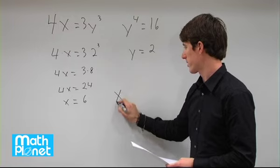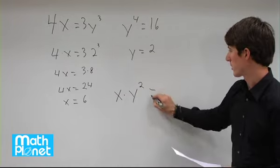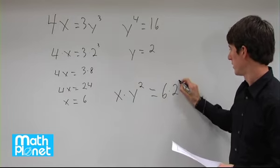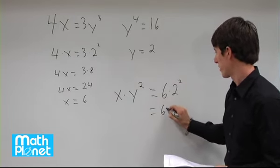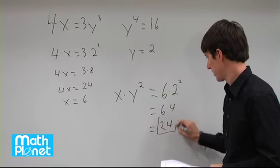and all we're looking for is x times y squared. So this is just evaluated as 6 times 2 squared. 6 times 4, which is 24.